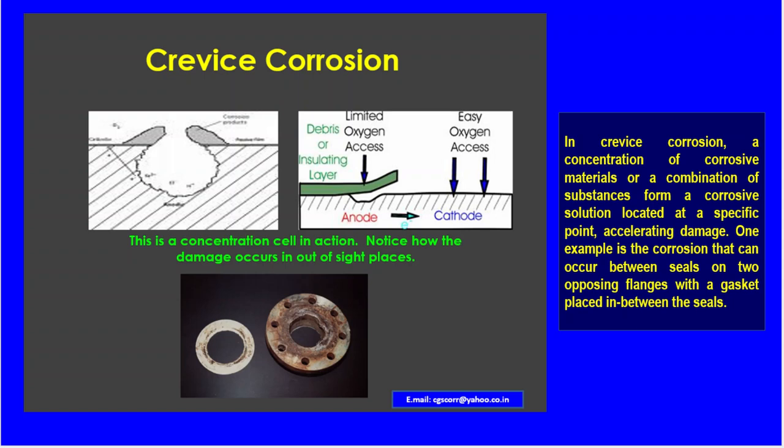In crevice corrosion, a concentration of corrosive materials or a combination of substances forms a corrosive solution located at a specific point, accelerating damage.